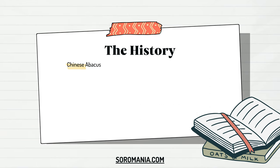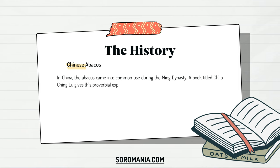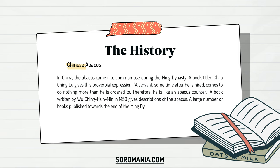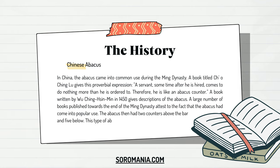The Chinese Abacus: in China, the abacus came into common use during the Ming Dynasty. A book titled Ch.o. Ching Lu gives this proverbial expression: a servant, sometime after he is hired, comes to do nothing more than he is ordered to — therefore, he is like an abacus counter. A book written by Wu Qing Hsianmin in 1450 gives descriptions of the abacus, and a large number of books published towards the end of the Ming Dynasty attest to its popular use. The abacus then had two counters above the bar and five below, and this type is still being used in China today.